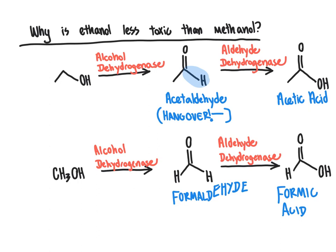What's going to happen is that the ethanol will end up swamping the alcohol dehydrogenase enzyme, and therefore the alcohol dehydrogenase enzyme won't be able to act on the methanol. As a result, the kidneys will hopefully have time to excrete the methanol as methanol starting material before it has a chance to get oxidized to the more toxic formaldehyde and formic acid products.